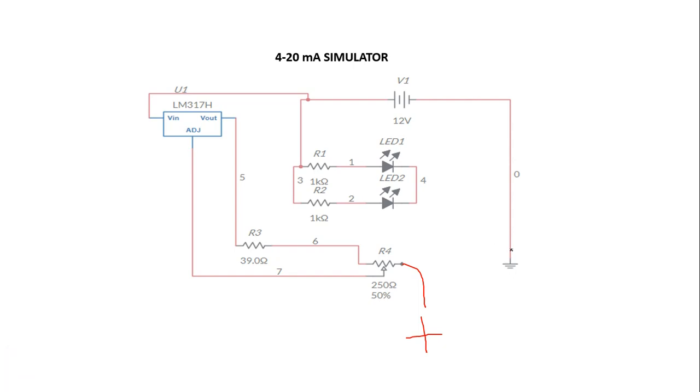Here is going to be the negative, so here we are going to have 4 to 20 milliamps. And here we need to add a resistor.